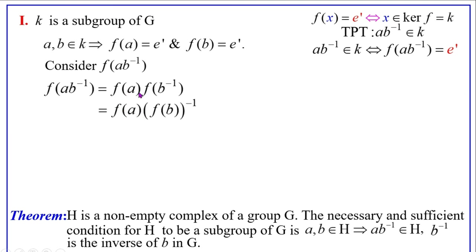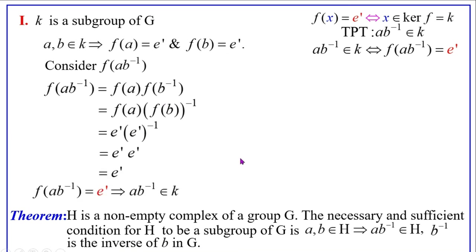That equals F(A)·(F(B))⁻¹, using the property of homomorphisms that F(B⁻¹) equals (F(B))⁻¹. Now F(A) equals E' and F(B) equals E'. Therefore we have E'·(E')⁻¹ equals E'. Thus F(A·B⁻¹) equals E', so A·B⁻¹ belongs to K. Hence by the theorem, K is a subgroup of the group G.